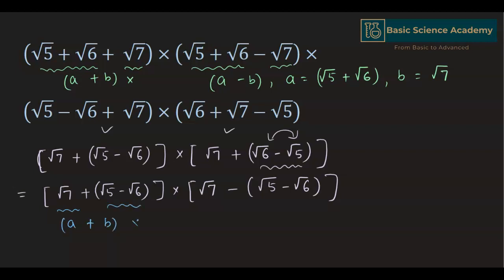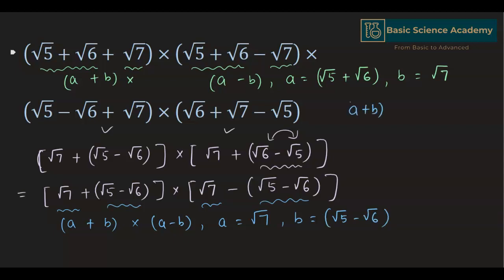Now this is in the form of (a+b) multiplied by (a-b), where a equals √7 and b equals (√5 - √6). We will use the identity (a+b)(a-b) = a² - b² to find the values of these expressions.